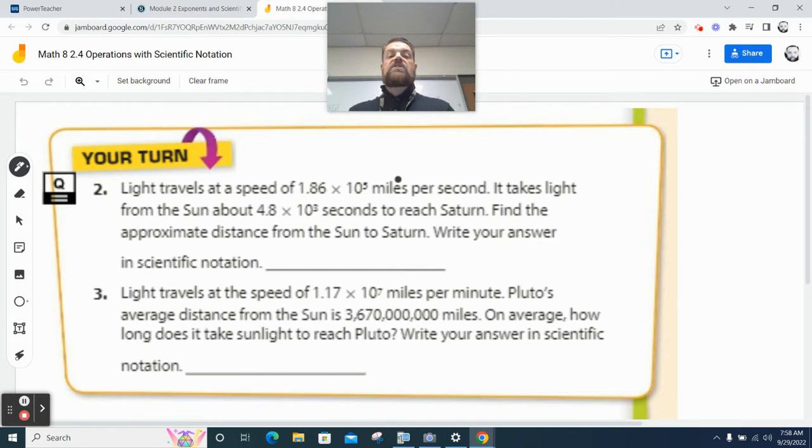Problem number two says, light travels at a speed of 1.86 times 10 to the 5th power miles per second. It takes light from the sun about 4.8 times 10 to the 3rd seconds to reach Saturn. Find the approximate distance from the sun to Saturn. So, distance is equal to rate times time.